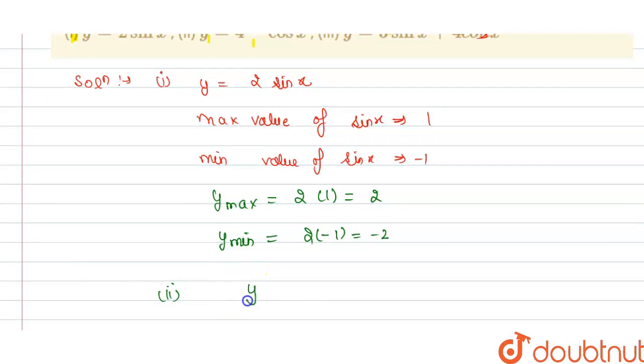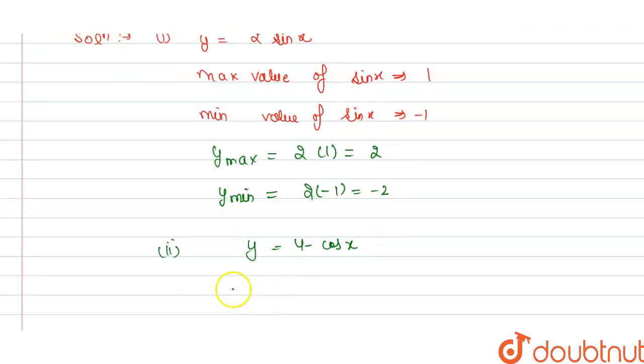y equals 4 minus cos x. So we have the maximum value for this y equals 4, and the maximum value for cos x is minus 1, so this will become